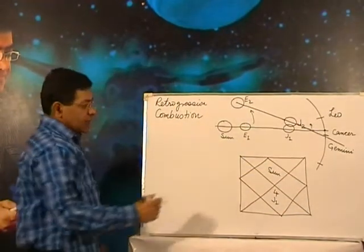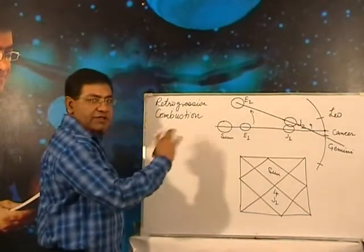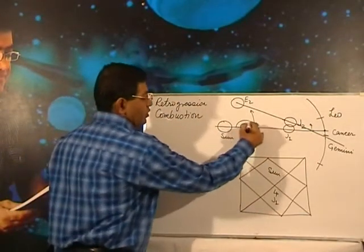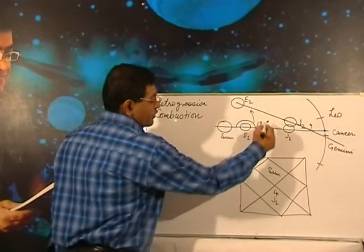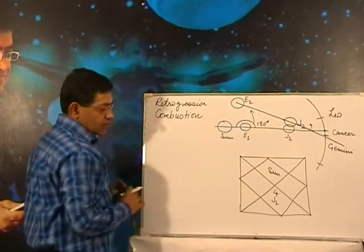That means if Sun and Jupiter are on either side of the Earth, 180 degrees, which I have shown here on either side of the Earth.